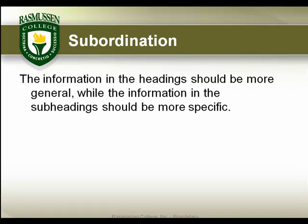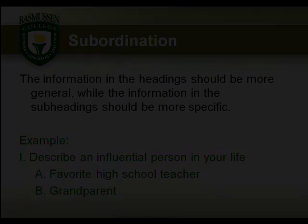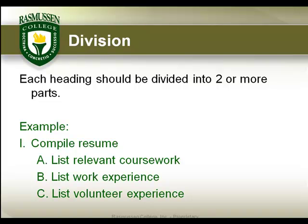Subordination should also be present, with information in the headings being more general while the information in the subheadings should be more specific. Referring to our example, a favorite teacher and grandparent are specific examples of the generalized category of influential people within your life. Finally, each heading should be divided into two or more parts to thoroughly discuss the heading. In the example shown, the heading 'compile resume' is divided into three parts. Technically there is no limit to the number of subdivisions, but if you seem to have a lot, it may be useful to see if some parts can be combined.